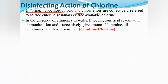In the presence of ammonia in water, chlorine or HOCl reacts with ammonia. Hypochlorous acid reacts with ammonia and successively forms monochloramine, dichloramine, and trichloramine. These are referred to as combined chlorine, whereas chlorine, HOCl, and OCl⁻ are free available chlorine.